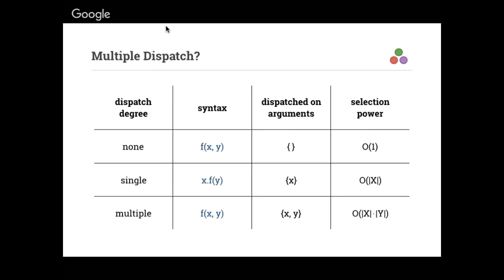Back in the early days of higher level programming languages, people got this notion of functions. But that was enough of an innovation. There was no dispatch. It was just F, which refers to some pointer somewhere that implements some functionality. It takes some arguments, it does some stuff, it returns. This was a big improvement on the spaghetti code go-to type of thing that people did in machine code before that. It made code much easier to understand and reason about.